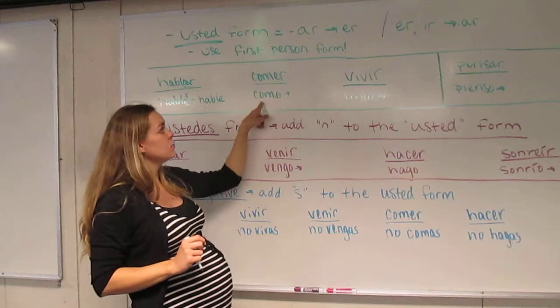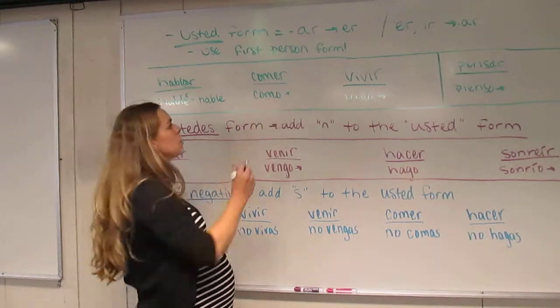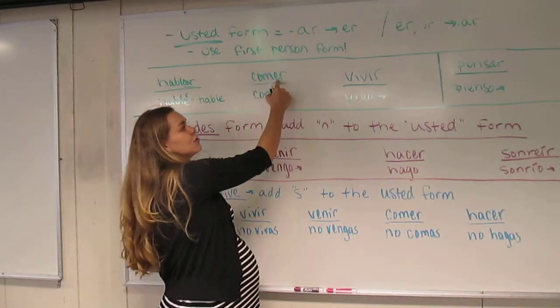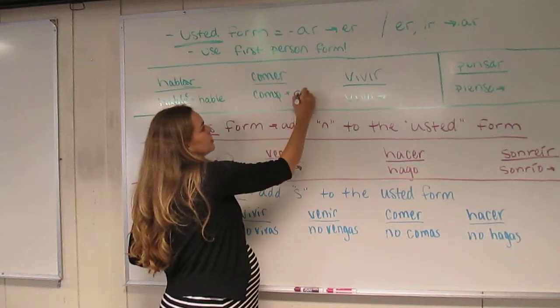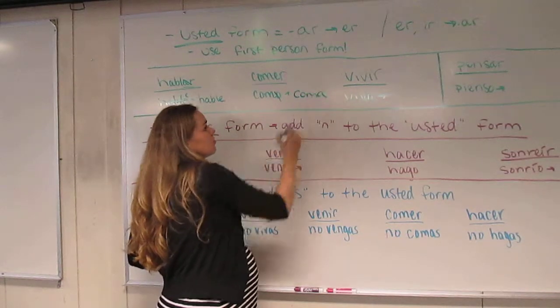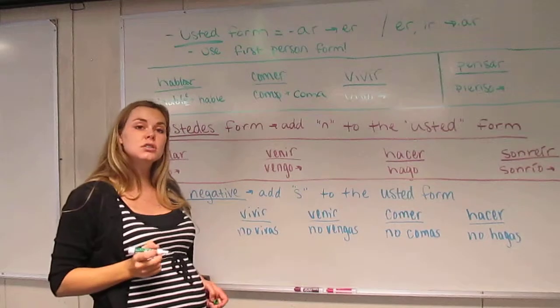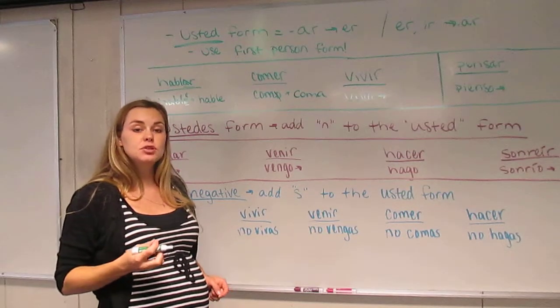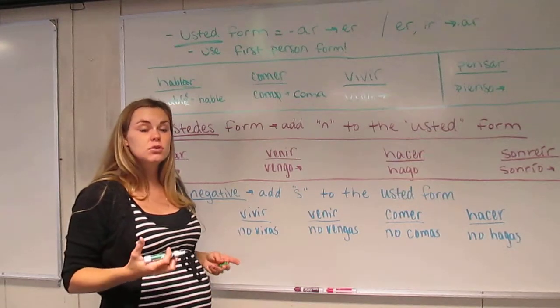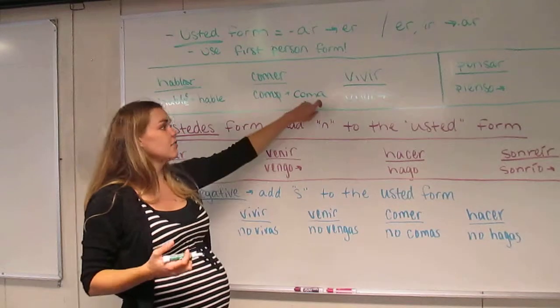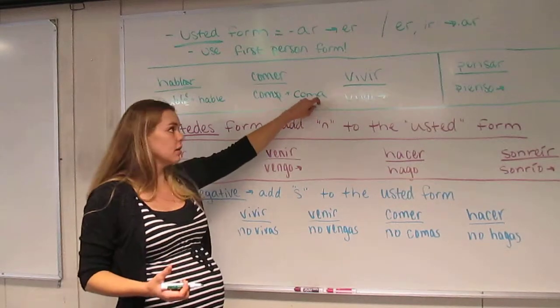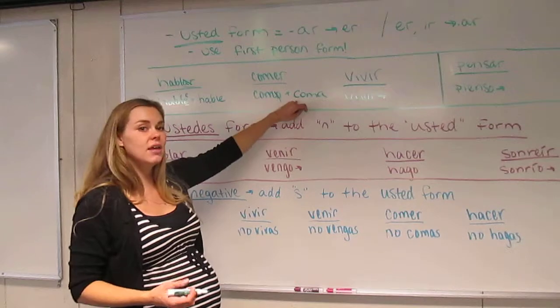Comer ends in ER. We take the first person form, chop off that O, and change the ER to an A. So if we were to tell, if you were to talk to me, a teacher, boss, somebody that you don't know, somebody that you look up to, an adult, you would say, if you want to say eat, you would say coma. Not come, but coma.